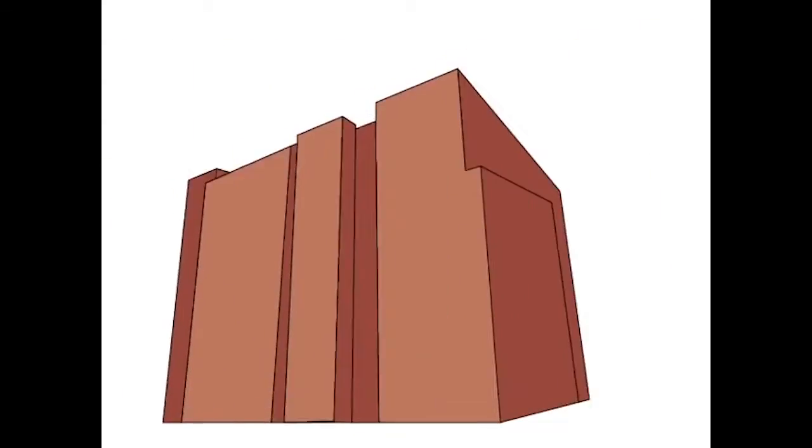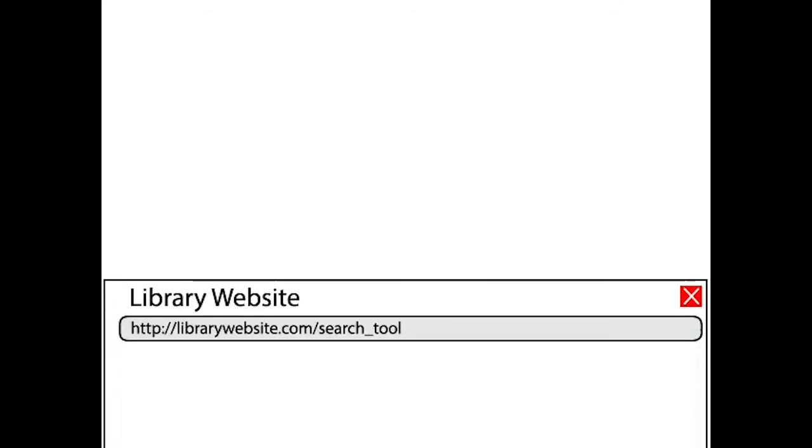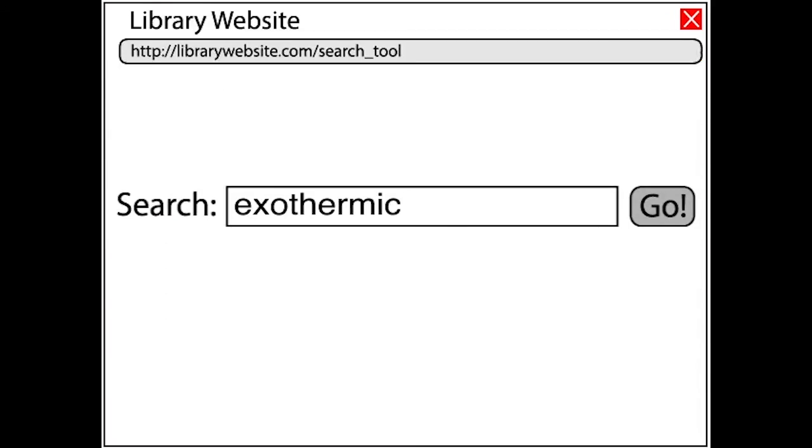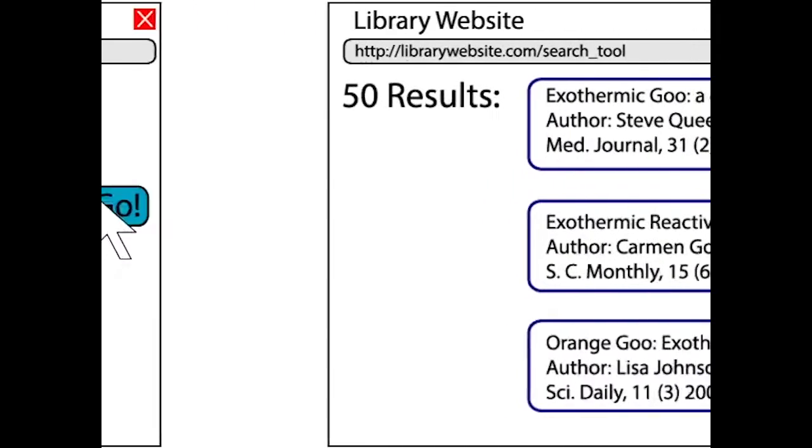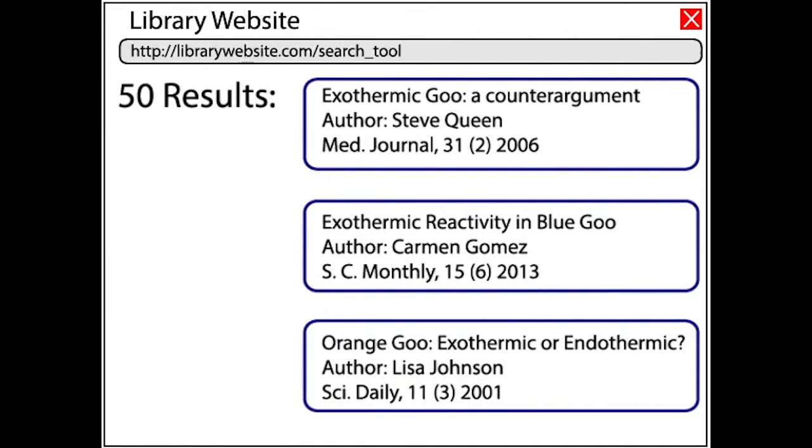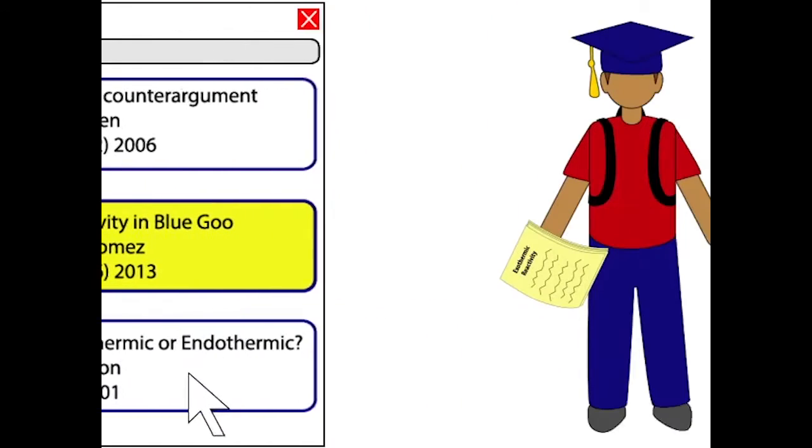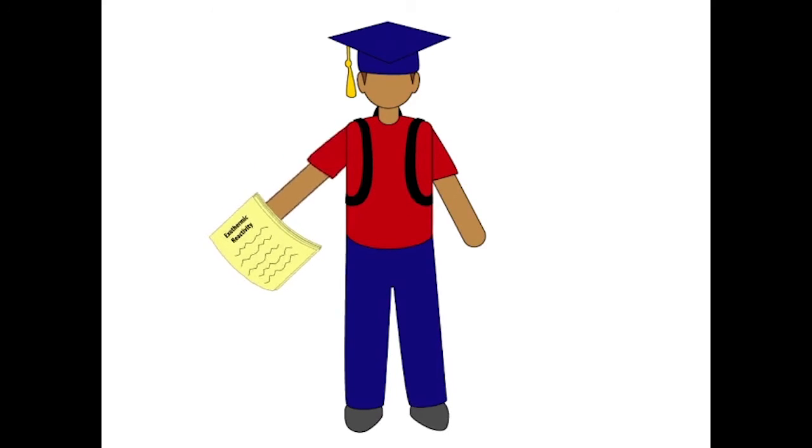Your library pays for access to these databases so that you can search them for articles related to your topic. The database's search tools allow you to quickly find articles that match your needs, such as Carmen's article. You might also uncover other articles that are useful to you. This makes it easier to find the information you need.